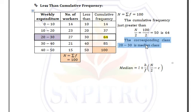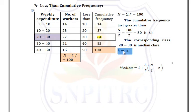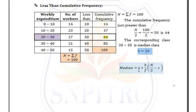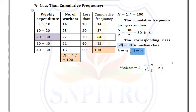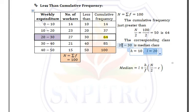In the median class, H is the class width, which is 10. L means the lower limit of the median class. The lower limit here is 20, so L = 20.